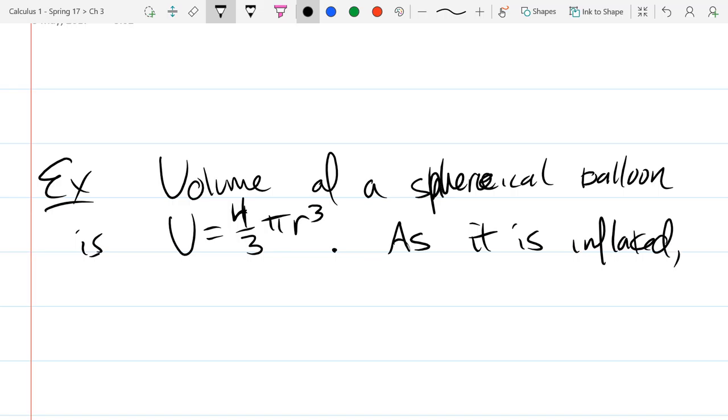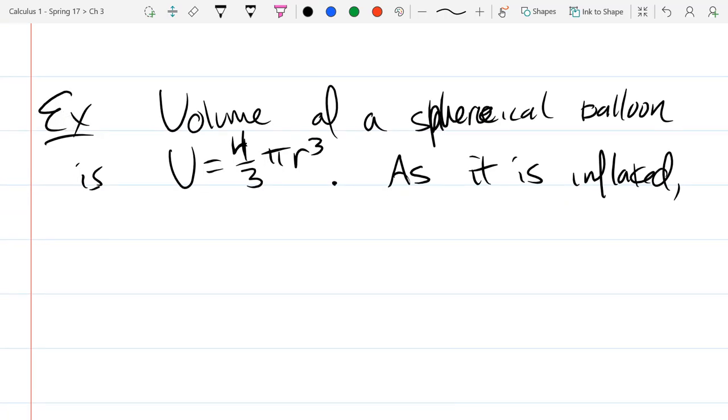Obviously things are changing, so in this volume equation both V and r are going to change as it's blown up. The four-thirds pi is not going to change. We're going to figure out exactly how the two rates are related. That's why we call this related rates.